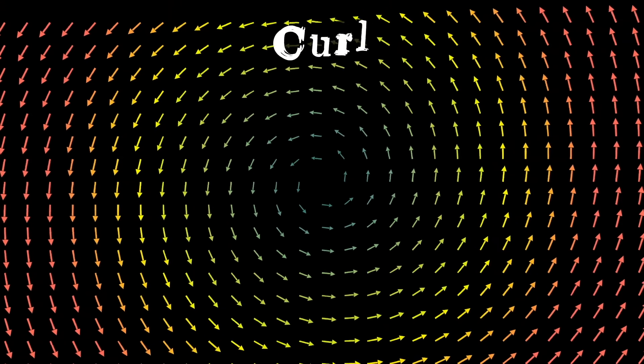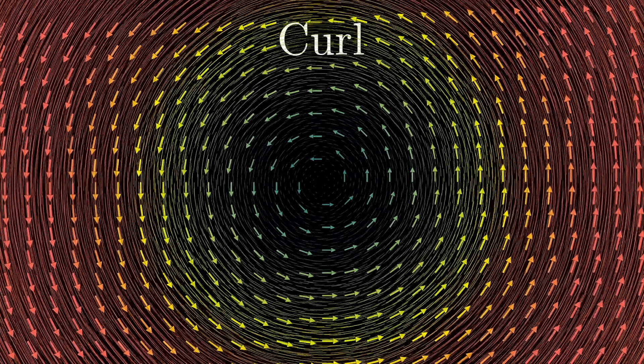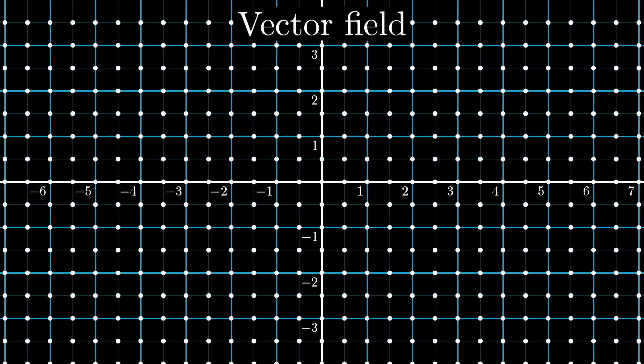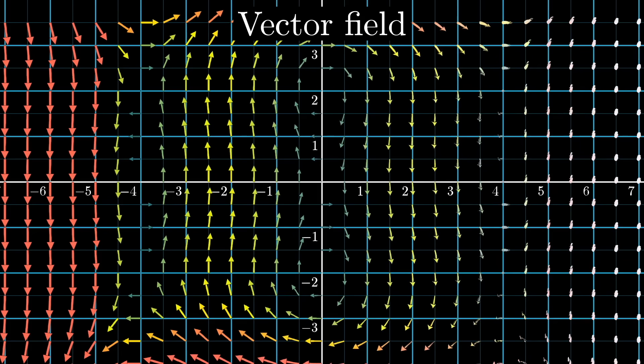Today, you and I are going to get into divergence and curl. To make sure we're all on the same page, let's begin by talking about vector fields. Essentially, a vector field is what you get if you associate each point in space with a vector, some magnitude and direction.